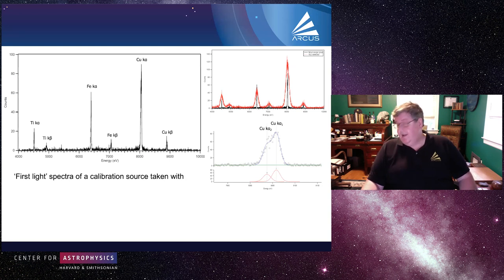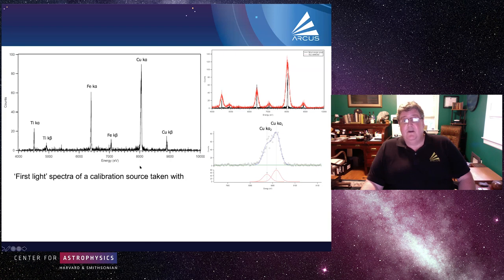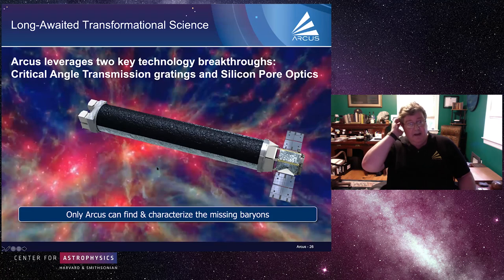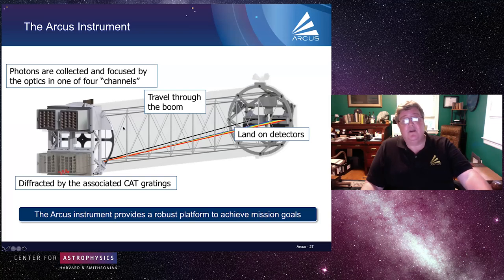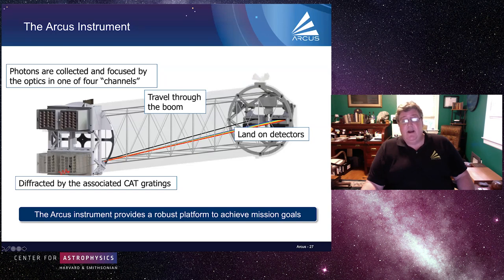I've been highlighting the EBIT in this talk because I'm hoping we won't be using it alone — we'd like ideas from other CFA members for what we can do with this microcalorimeter and EBIT. This is going to be an exciting new opportunity. Back to ARCUS: it uses two key breakthroughs — critical angle transmission, or CAT, gratings and silicon pore optics. The x-rays come in through one of four channels, each combining x-ray optics and gratings. They are focused, diffracted, travel through the boom, and land on detectors — two reflections and then detection.